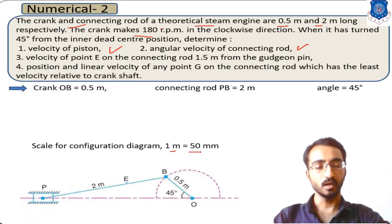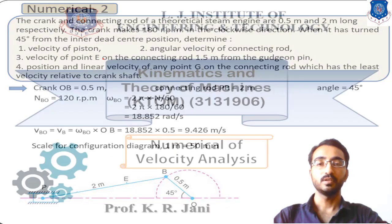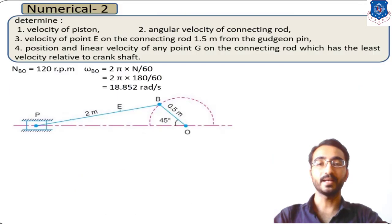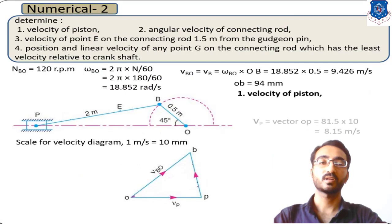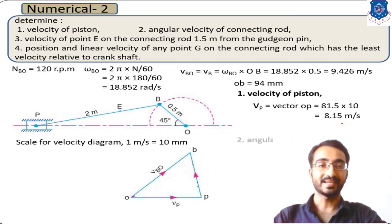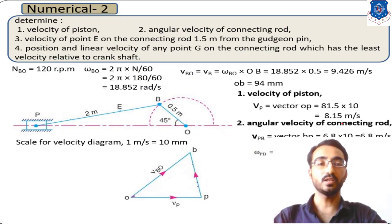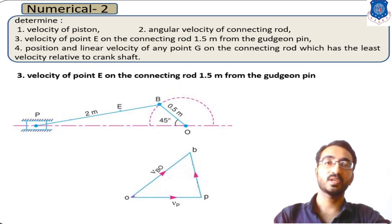With the help of this configuration diagram, the velocity of the piston was obtained using the velocity diagram and that is 8.15 meter per second. Similarly, we calculated the angular velocity of the connecting rod.